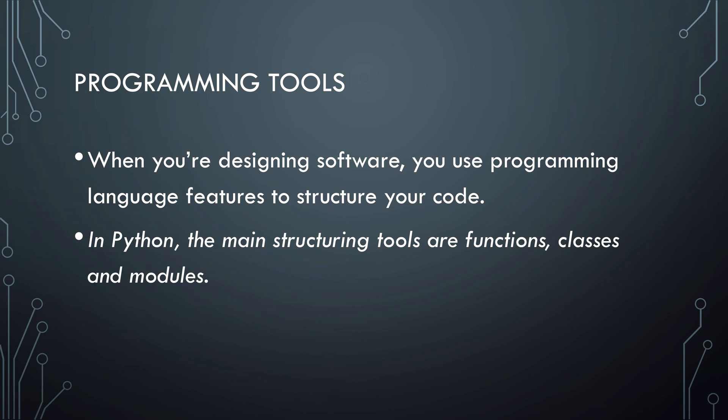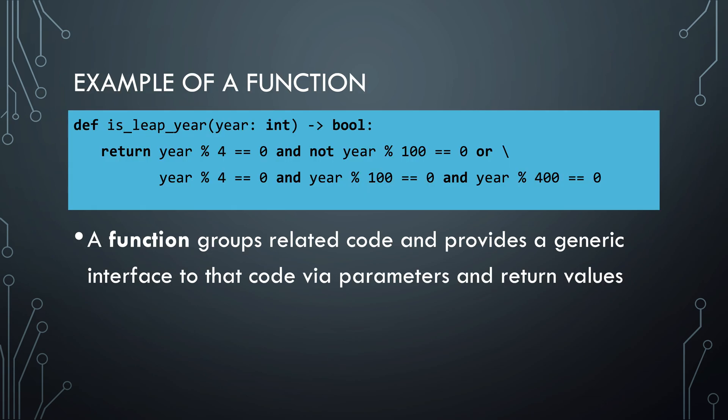The key ingredients of this toolbox are Python functions, classes, and modules. Here's an example of a Python function that computes whether a given year is a leap year. There are a few rules that determine if a year is a leap year. It doesn't really matter what those particular rules are in this video. What you do see is that they translate into a rather complicated logical expression. Whenever you need to determine in your software whether a year is a leap year, you don't want to have to remember this expression every time. So, it makes sense to put it in a function. A function is a group of code that is related. It provides an interface to that code via its parameters and it provides a return value.